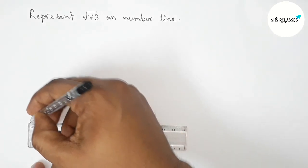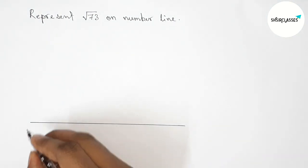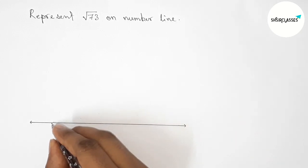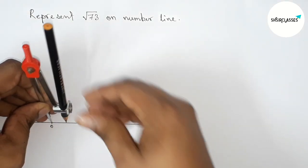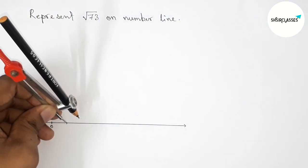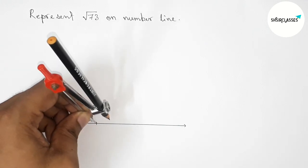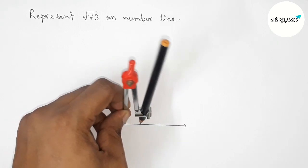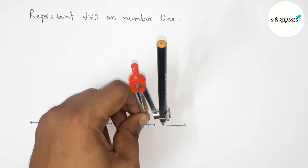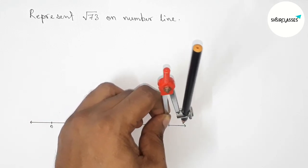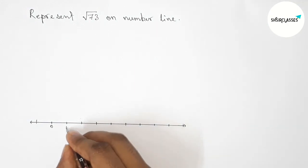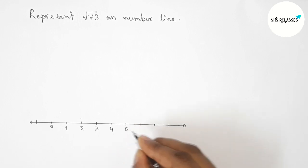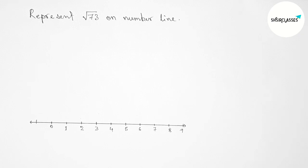First, drawing a line segment of any length with arrow marks on both sides. Taking the starting number zero, then with the help of compass and scale, marking the numbers on the line to construct a number line. The length between any two numbers is one unit length. So marking one, two, three, four, five, six, seven, eight, nine and continuing, and on this side minus one and continuing. This is a number line.